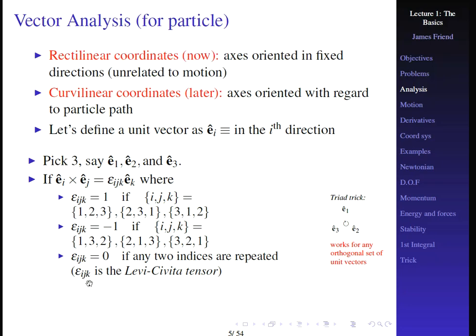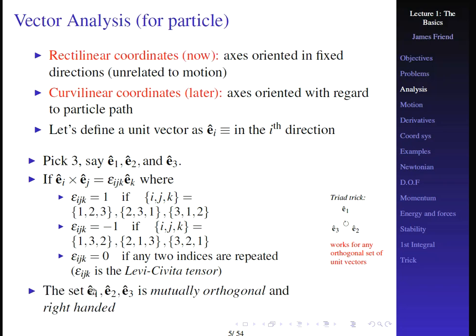ε_ijk is called the Levi-Civita tensor. If any two indices are repeated, ε_ijk = 0. For example, ε_111 = 0 and ε_112 = 0. The set {E_1, E_2, E_3} is said to be mutually orthogonal and right-handed if we define everything in this way, and that is what we'll do for the remainder of this course.